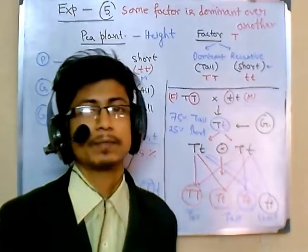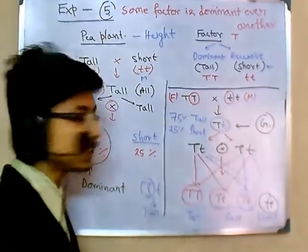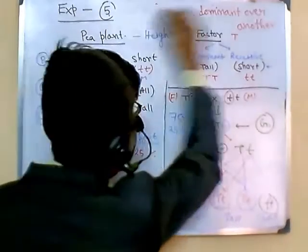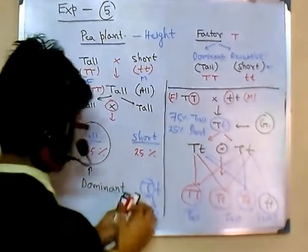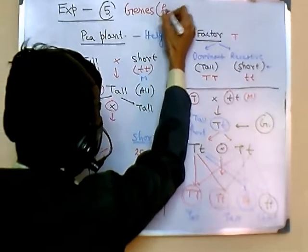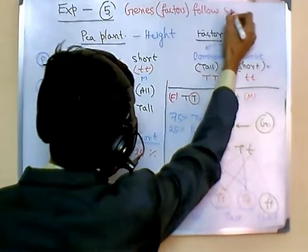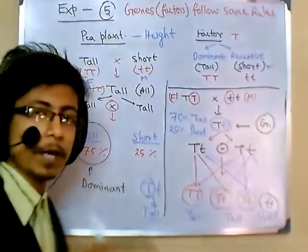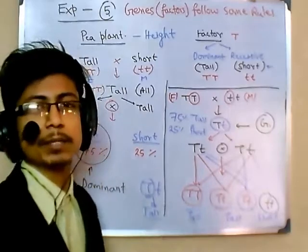So one gene comes from father and one gene comes from mother — one from each parent. Genes, also termed as factors, follow this rule. That is the conclusion of experiment five. Thank you.